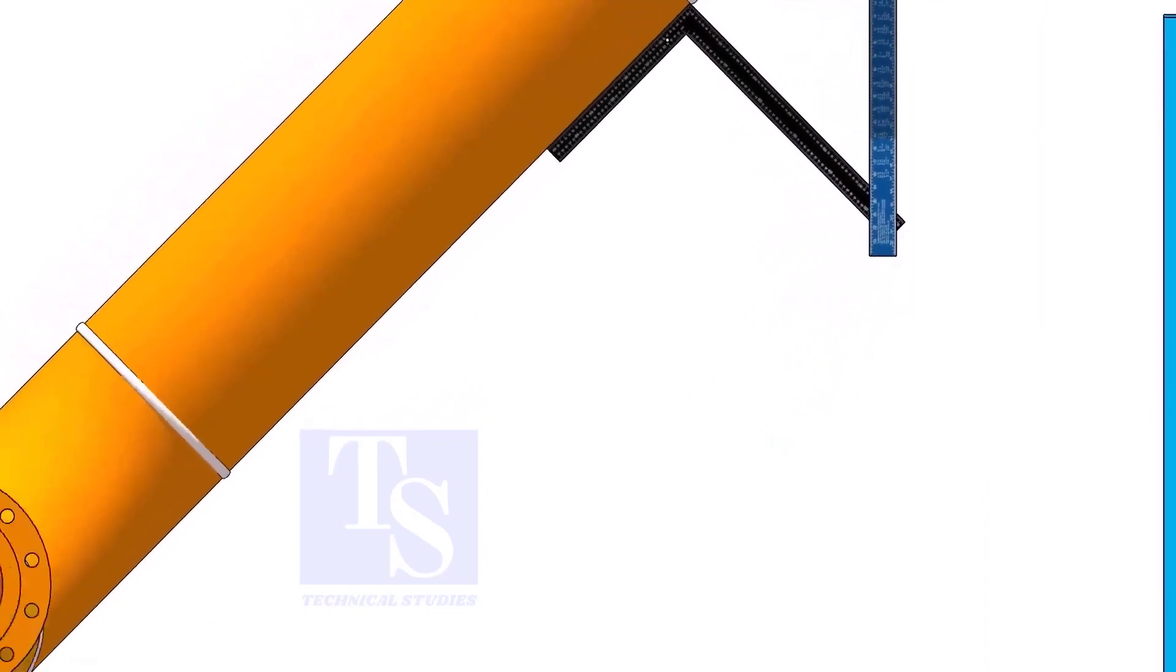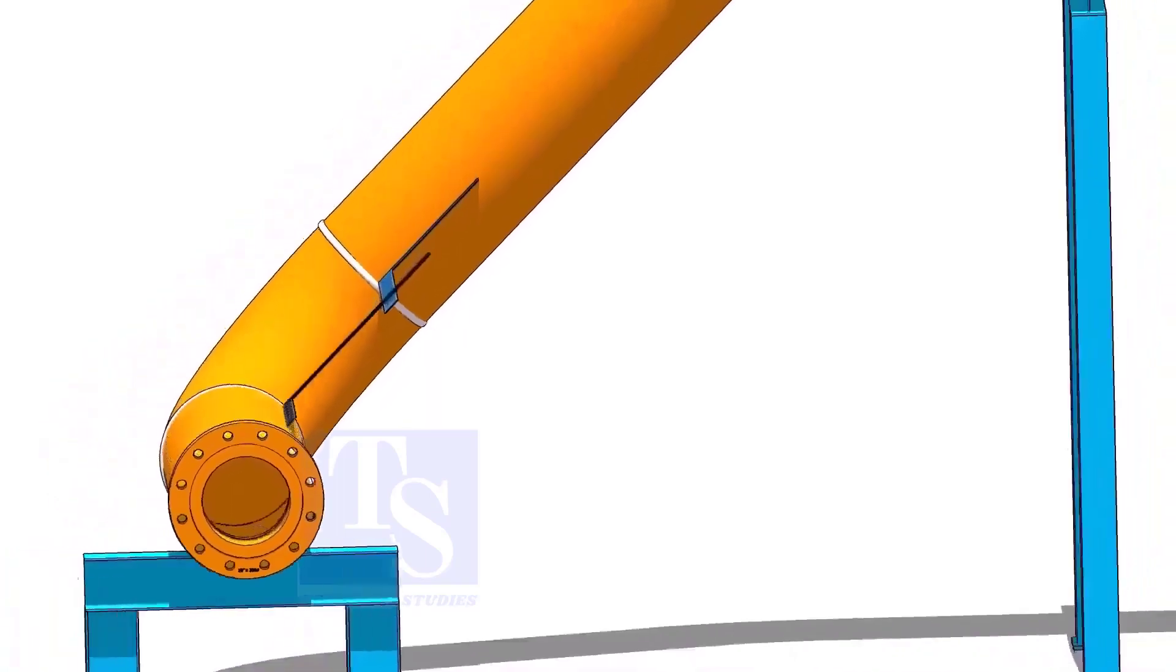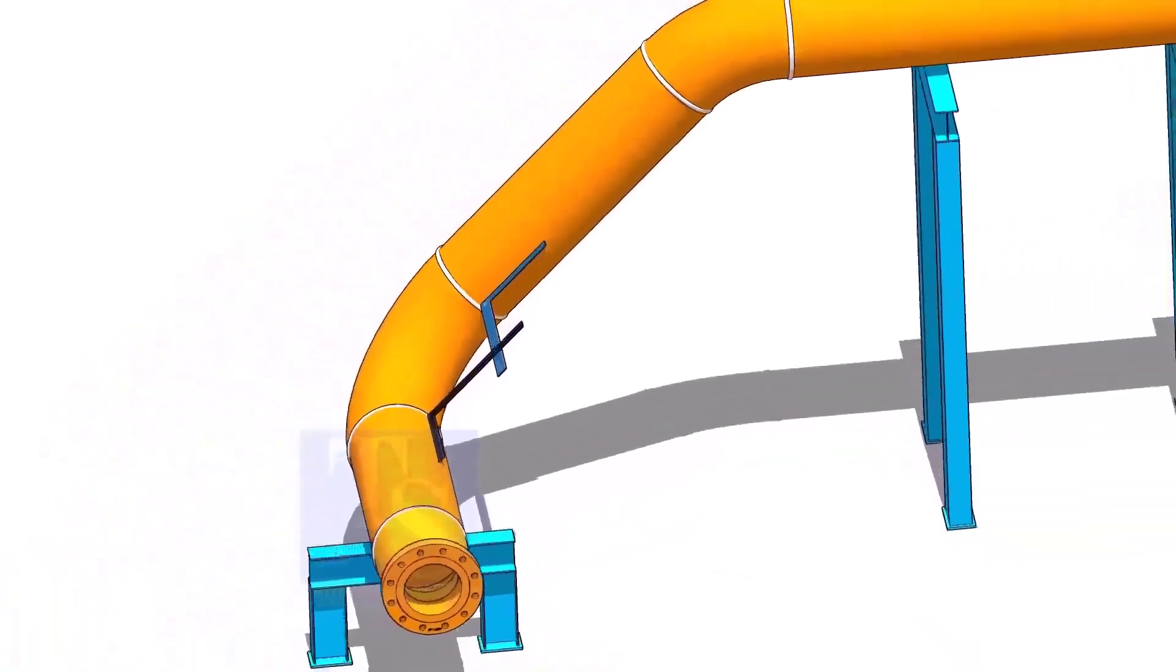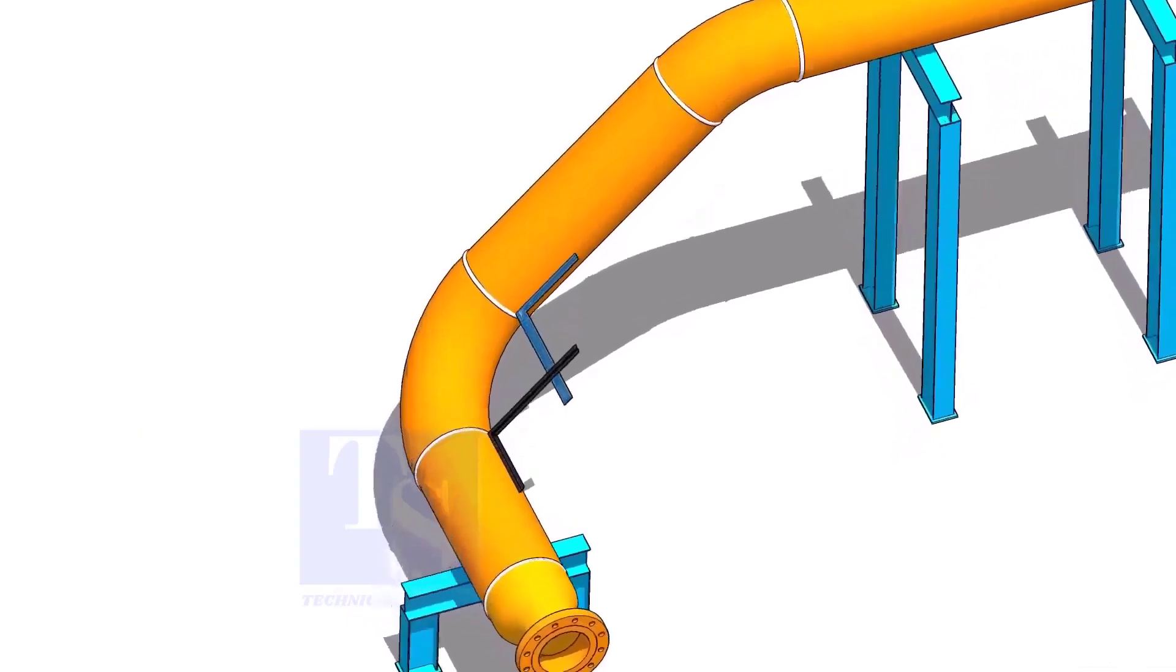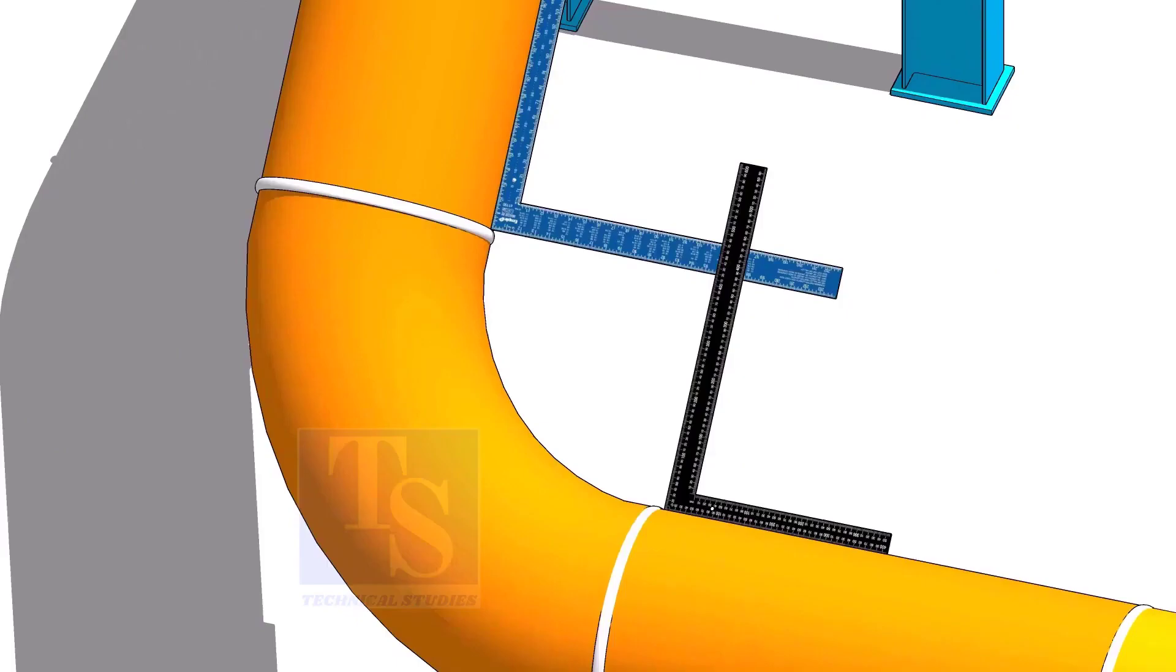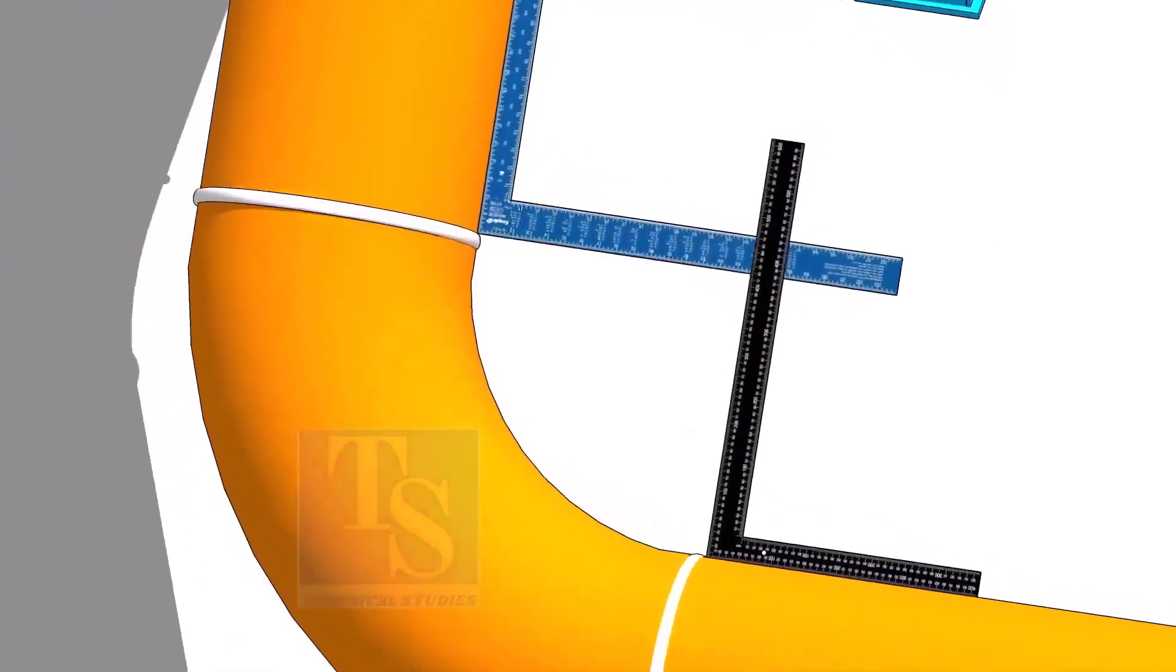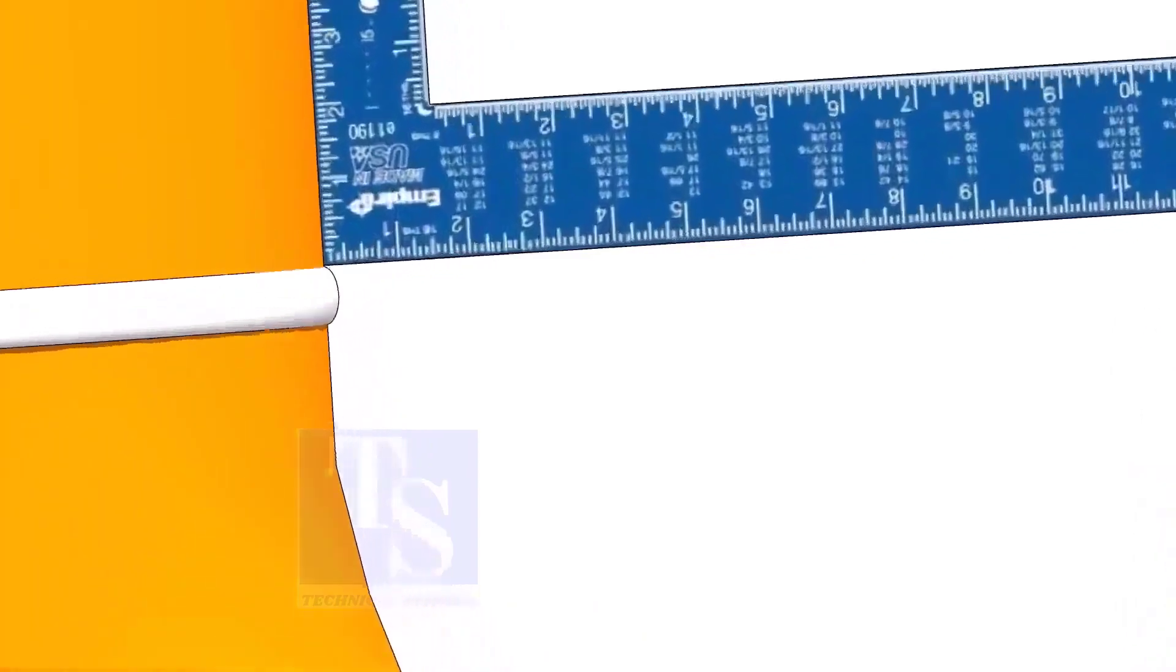Let us check the degree of one more elbow. Hold right angles, as mentioned in the previous exercise.